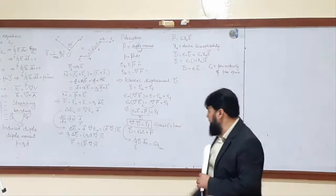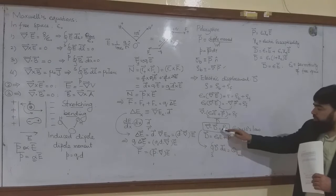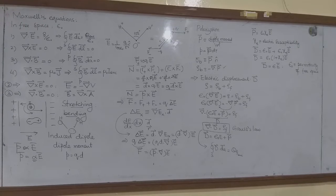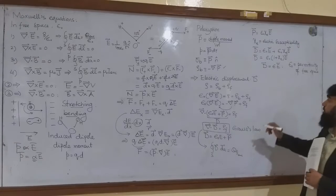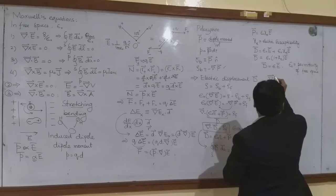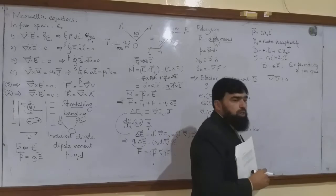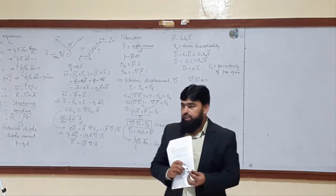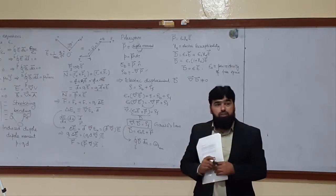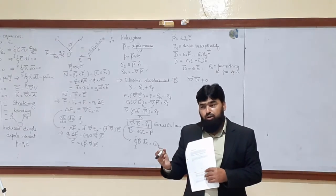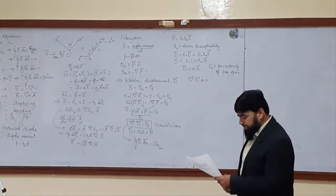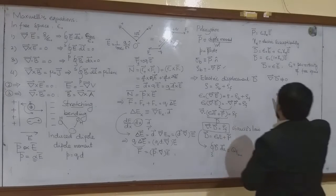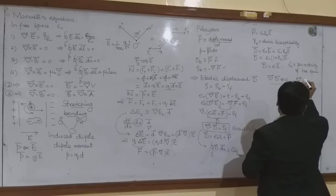Now let's discuss the divergence of D a little more. Divergence of D equals rho_f. What does it mean? D will always be divergent — it is zero only when there are no charges. Whenever there are free charges, divergence of D will be equal to non-zero. When divergence of something is non-zero, what does it mean? It means curl is equal to zero.